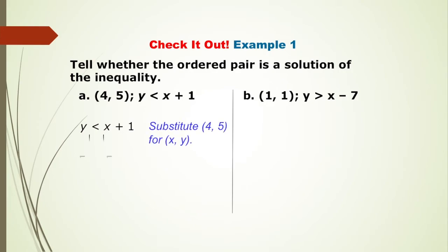And we have 5 is less than 5, which is wrong because 5 is equal to 5. Therefore, 4 and 5, the ordered pair, is not a solution to this inequality.